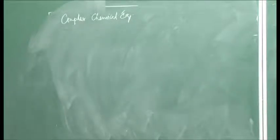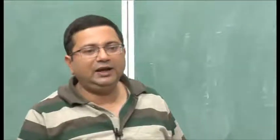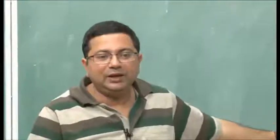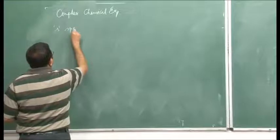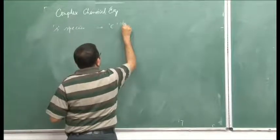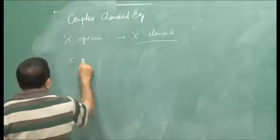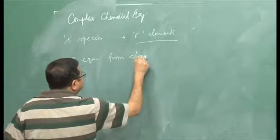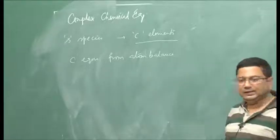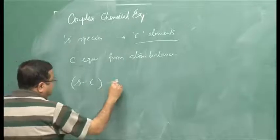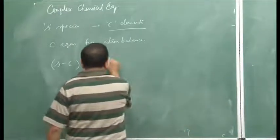We have seen in the previous class an example where the reaction occurred at high temperature with 4 species and 9 unknowns, so atom balance alone was not enough. In the general case, if we have S species formed from C elements, atom balance for C elements gives C equations. Therefore S minus C is the number of additional equations required — called the degree of reaction freedom.